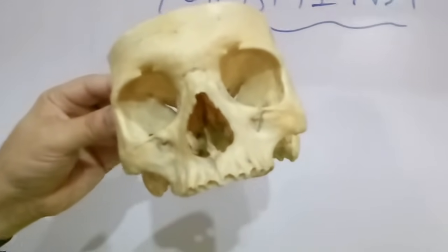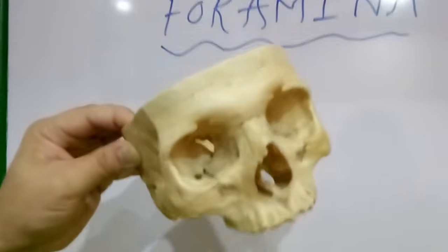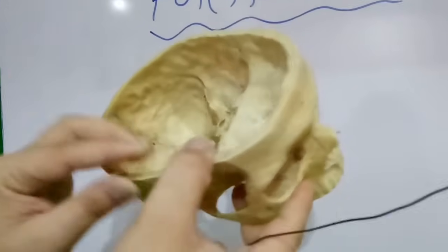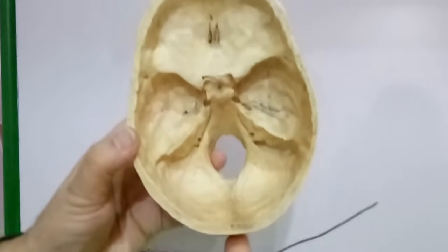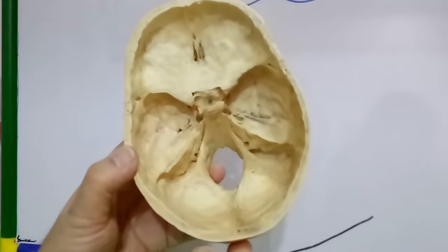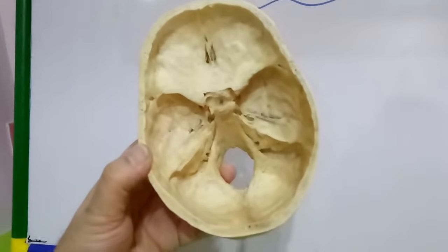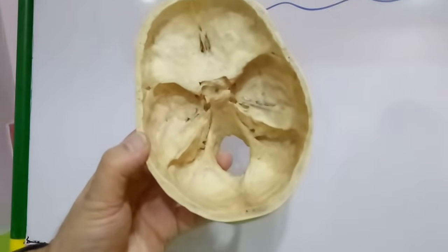These are the main foramina in the skull and the structures passing through them. Thank you.